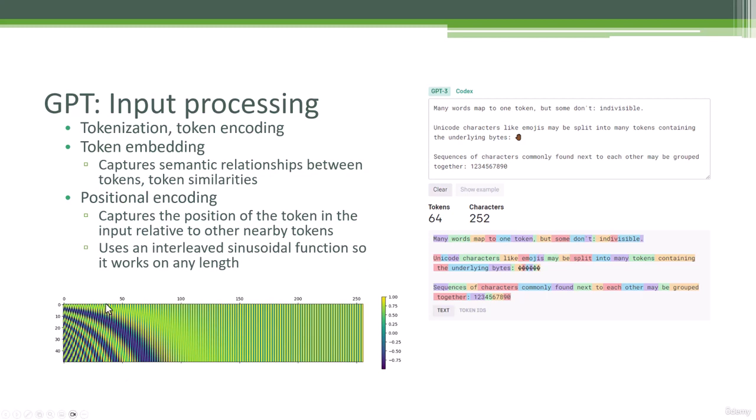So we take the position of the token, we pass it through this positional encoding, and we get a representation of where this token is amidst the other tokens around it. Yes, this will repeat eventually, but when done right, by that point, you're so far away from the other tokens that it doesn't matter anymore.